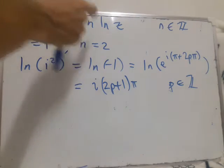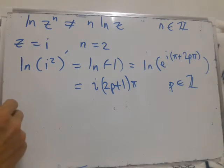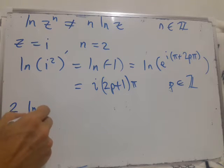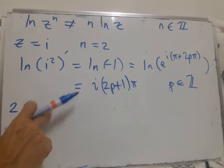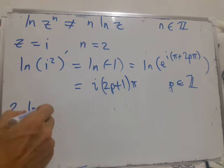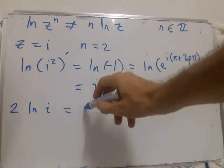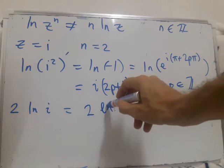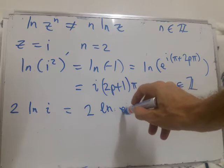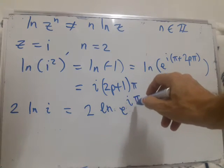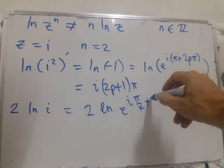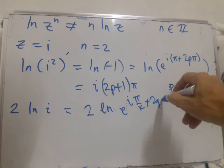Now, what happens with this one? So we've got 2 log z, sorry, 2 log i. So log i is log of e to the i pi by 4 plus 2q pi.